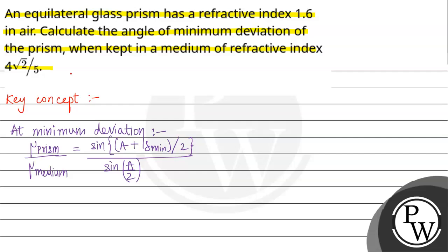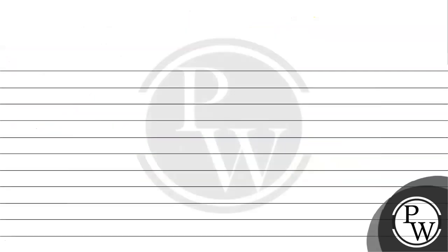At minimum deviation, if you have a prism and a ray of light passes through it, the ray of light inside the prism travels parallel to the base. This angle here is the angle of prism A.